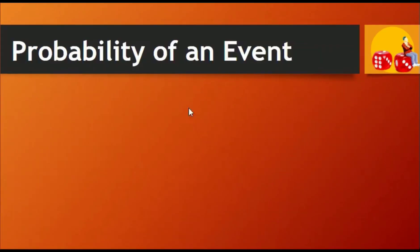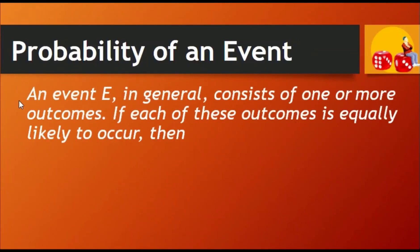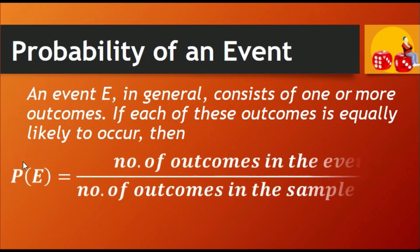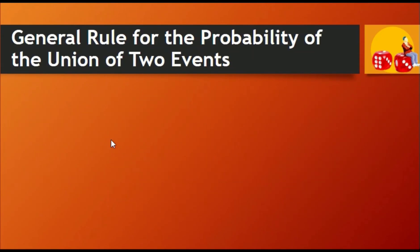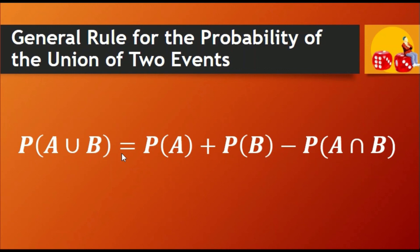Always remember the following. Number 1: An event E, in general, consists of one or more outcomes. If each of these outcomes is equally likely to occur, then the probability of E is equal to the number of outcomes in the event over the number of outcomes in the sample space. Number 2: The probability of A union B is equal to the probability of A plus the probability of B minus the probability of A intersection B.